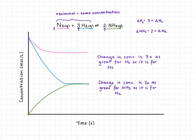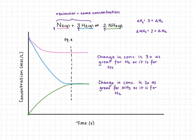We can tell when equilibrium has been established on a graph by when our concentration curves flatten out. On this graph, the dotted line shows us when equilibrium is established — we recognize it because there is no change in concentration over time.